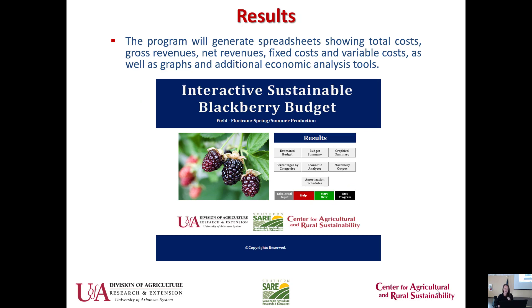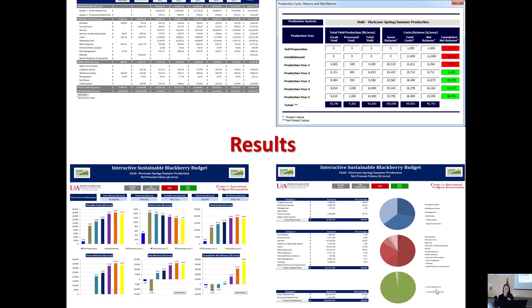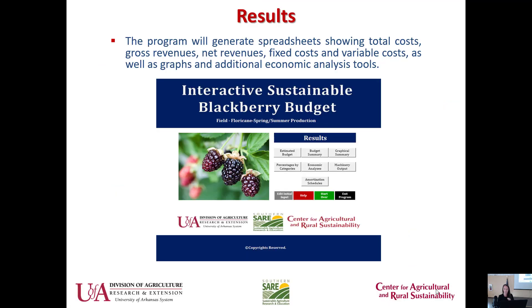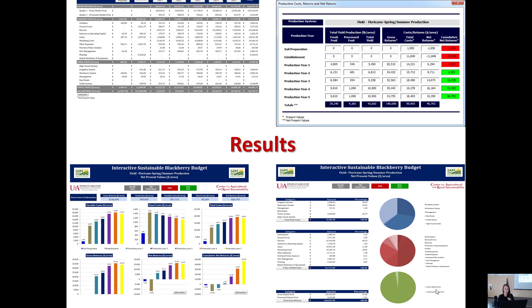Once you hit Run, a results screen comes up — this is where you get to see a lot of cool information. It automatically generates spreadsheets based on that little bit of information you entered up front. It shows your total costs, gross revenues, net revenues, fixed costs, variable costs, and some graphs. It gives you the overall estimated budget as a big spreadsheet with different cost categories, then a summary and graphical summary.